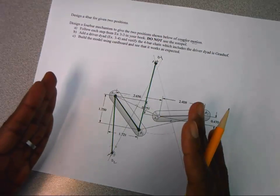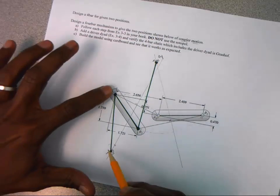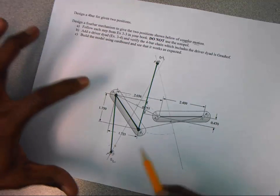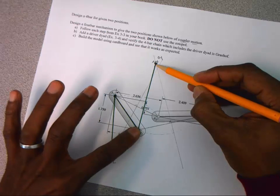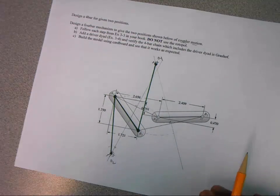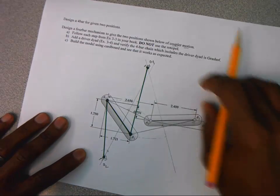The way we do that is to add a driver dyad. We already have four links. We have our ground link from O2 to O4. We have a rocker from O2 to A1. A coupler from A1 to B1. And a rocker from B1 to O4. But we're going to go ahead and add in a driver dyad. And it's up to us kind of where we place it. I'm going to put it up here. I've got a lot of free room over here.